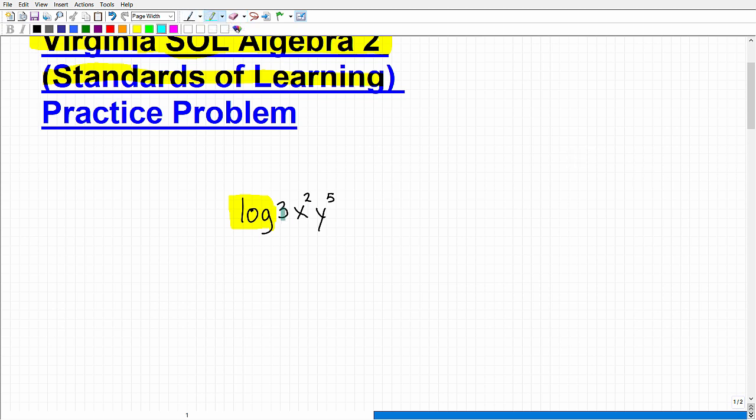And what do we got going on? Well, I have 3 times x squared times y to the fifth, right? So this is a product. So here we have a property of logarithms that says that we can separate each one of the factors in this product by addition. So I can write this as log, common log, log 3 plus log x squared plus log y to the fifth power. But I'm not done yet.